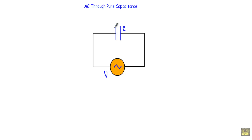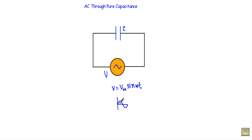In this video, I will show you a capacitor whose capacitance is C Farads. I will apply an alternating voltage V, given by the equation V equal to Vm sine ωt. As this is a pure sine wave, it will have a wave shape with positive and negative half cycles. As I am applying an alternating voltage, I will get an alternating current flowing in this circuit.